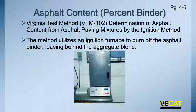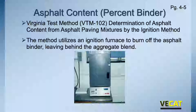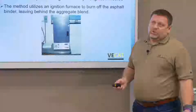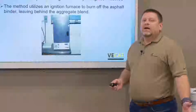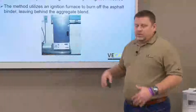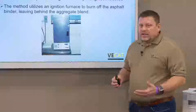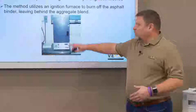When we talk about asphalt content or percent binder in the mix, we follow Virginia test method VTM 102 to determine the asphalt content. We put a sample in a furnace and burn off all the binder. Prior to using the furnace — we've only been using it for approximately 20 years — we used to do something called refluxes or centrifuges, both of which can still be done if you have an aggregate that doesn't work well in the furnace.